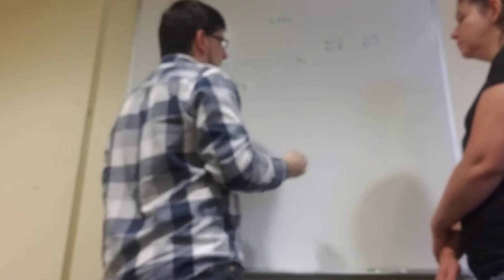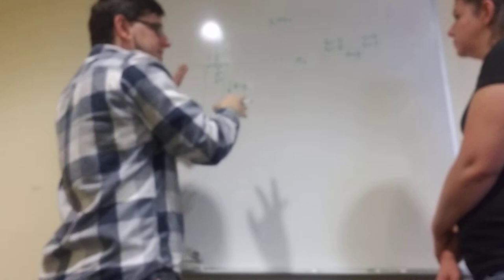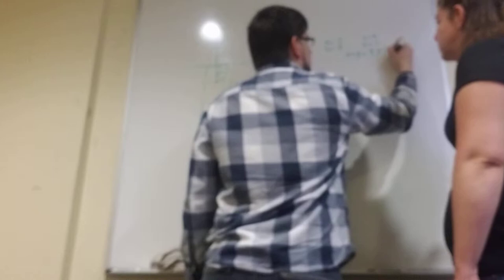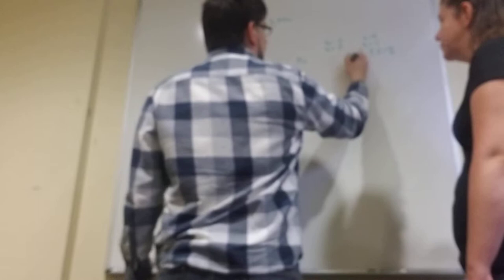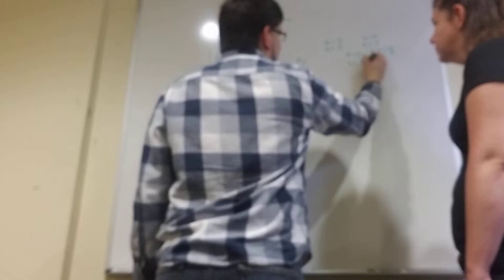So, V1 is, we don't know. We're not giving that information. And for this problem, there's only one acceleration. It's just the acceleration due to gravity. And, because we know that gravity, or because of the way we chose our origin, gravity is pointing up. So, gravity is positive, and we're going to use the 9.81 meters per second squared. Okay? And then, the last bit of information is our time, which, from before, we know is 3.80 seconds.